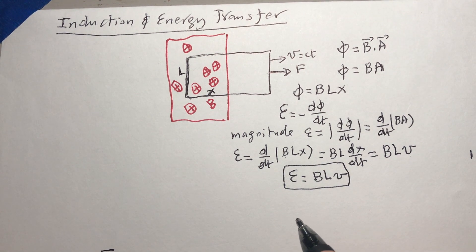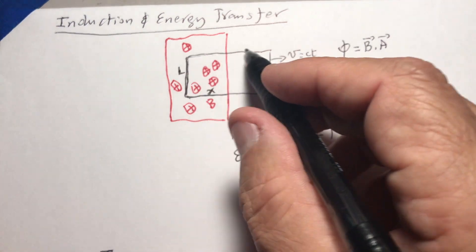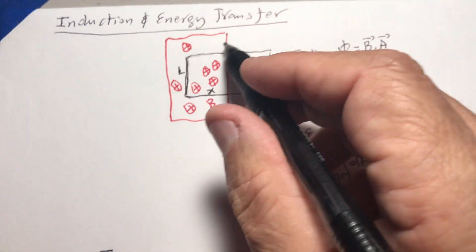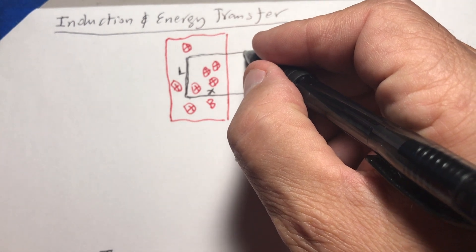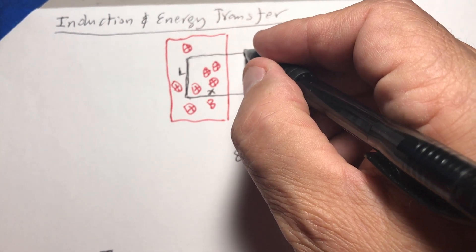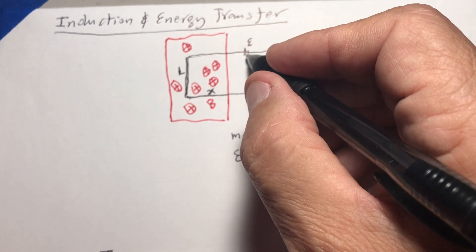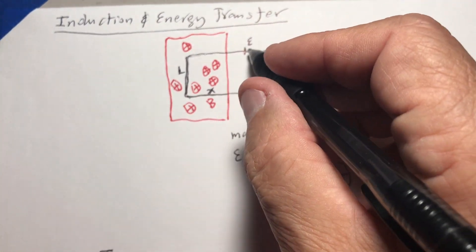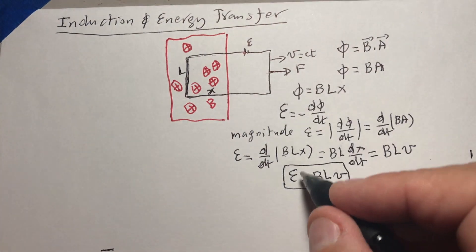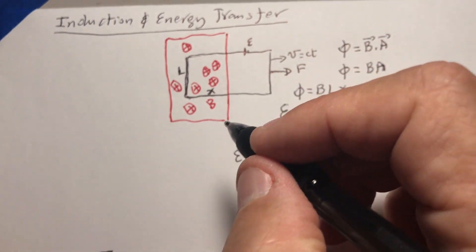This E is the electromotive force, which means a voltage. We can think of it like a battery giving us this EMF, but there is no physical battery — it's just the induced EMF. This means a current is going to be generated in the wire.